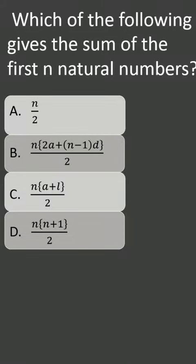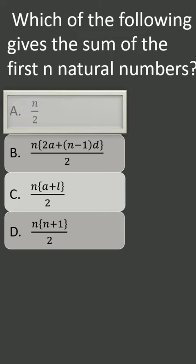Which of the following gives the sum of first n natural numbers? Four options are given. Let us see which option is correct.